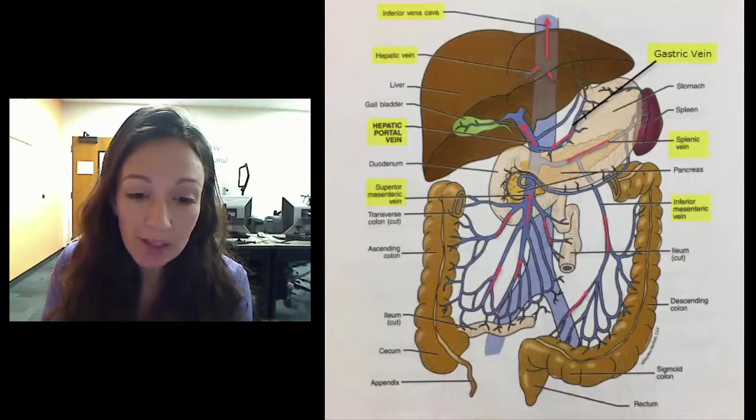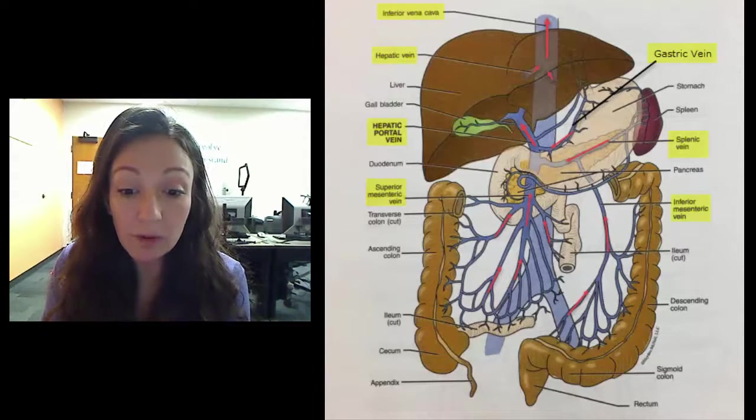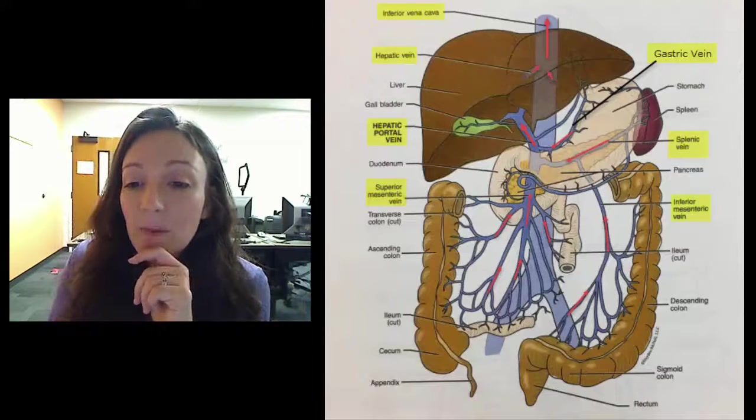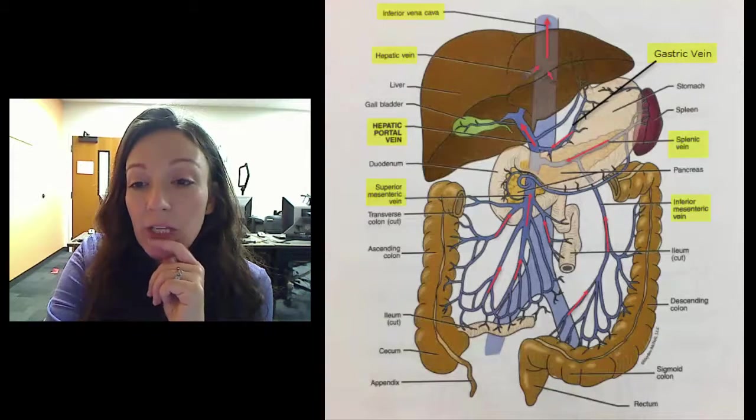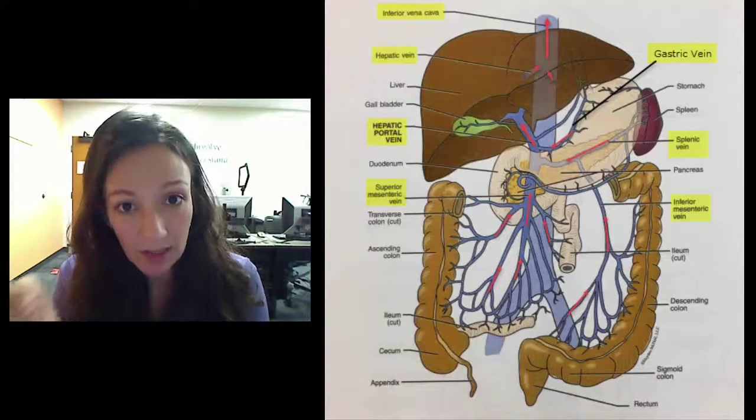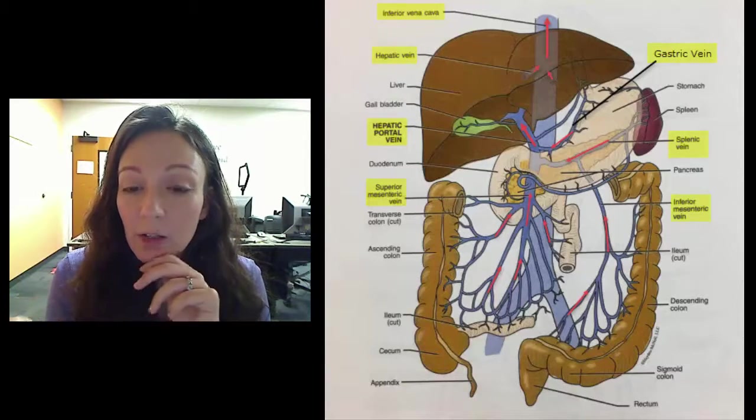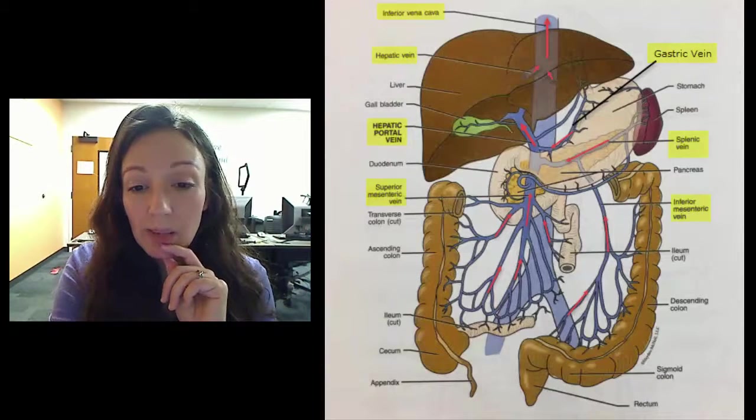Oh, and the superior mesenteric vein also drains blood from the small intestine as well. So make sure you know that. And then the splenic vein, draining blood from the spleen and gastric vein, which I added. Make sure you add this in your book, the gastric vein. Draw it in there with a little arrow. That drains blood from the stomach.